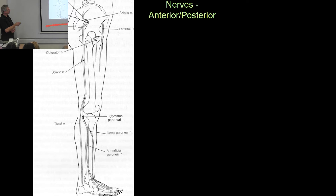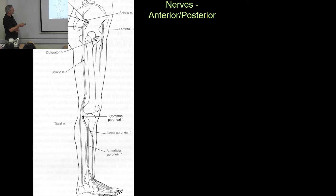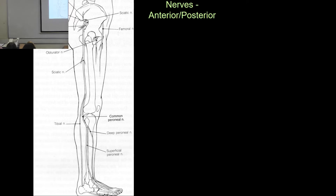Posteriorly we have the sciatic nerve, which runs down the posterior aspect of the thigh and comes out of the pelvis at the greater sciatic notch. The sciatic nerve is actually two nerves all the way down its length, and it branches into those two nerves just above the knee — the common peroneal (also known as the common fibular nerve) and the tibial nerve. There are other nerves, such as the gluteal nerve, but the three main ones are the femoral, the obturator, and the sciatic.